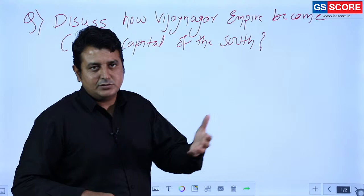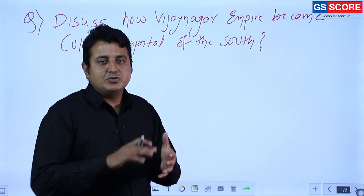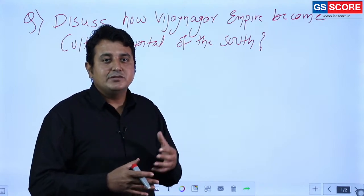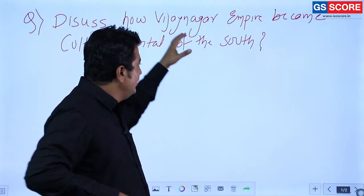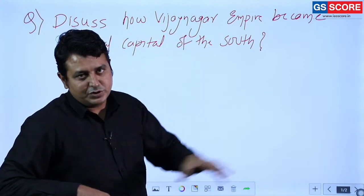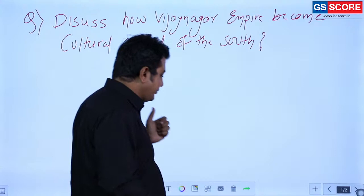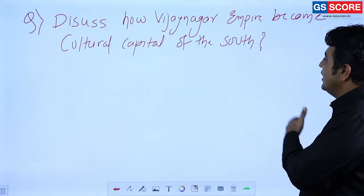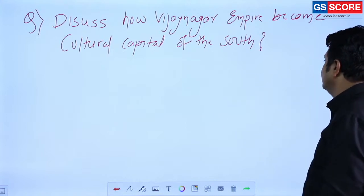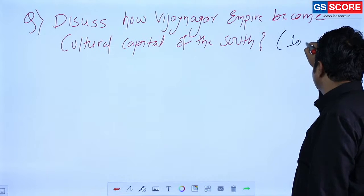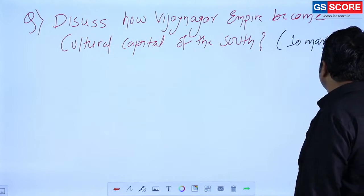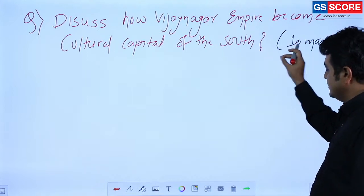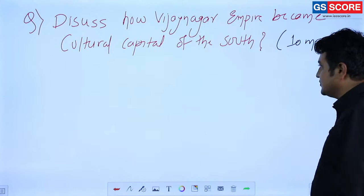So for discussing Vijayanagara, first we are going to discuss the question - what exactly the question is, from where it is asked - then we are going to discuss the concepts, and finally how we are going to solve it. For example, here is a question: 'Discuss how the Vijayanagara Empire became the cultural capital of South India.' This question was asked for 10 marks in previous years.